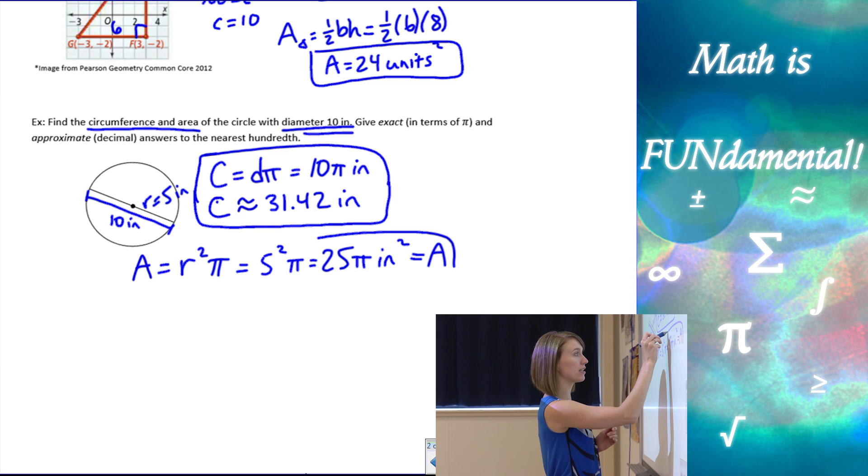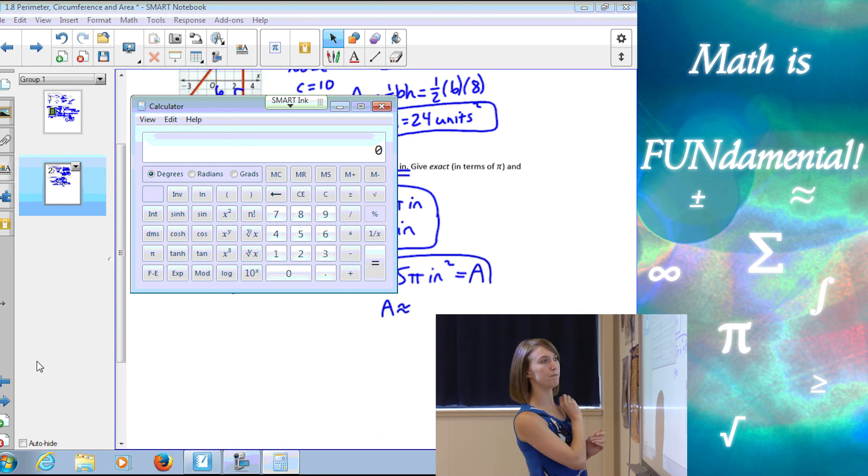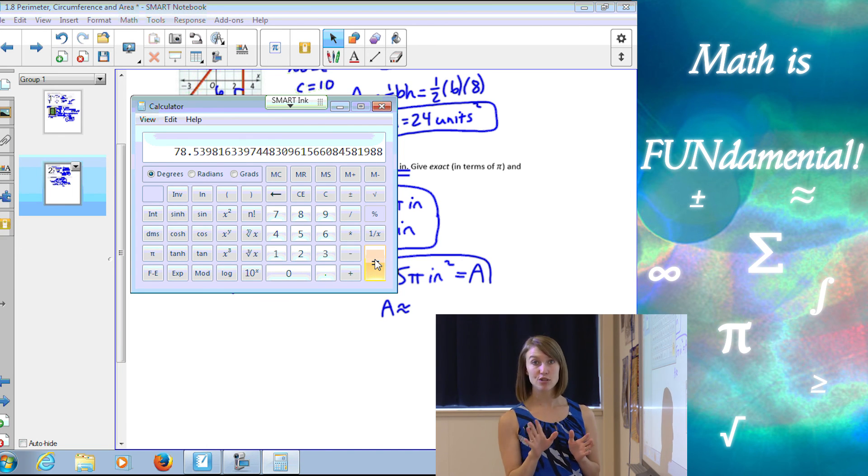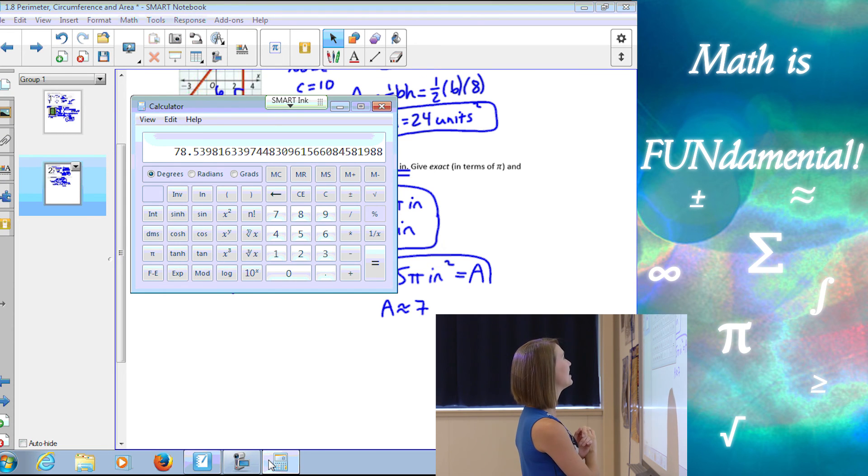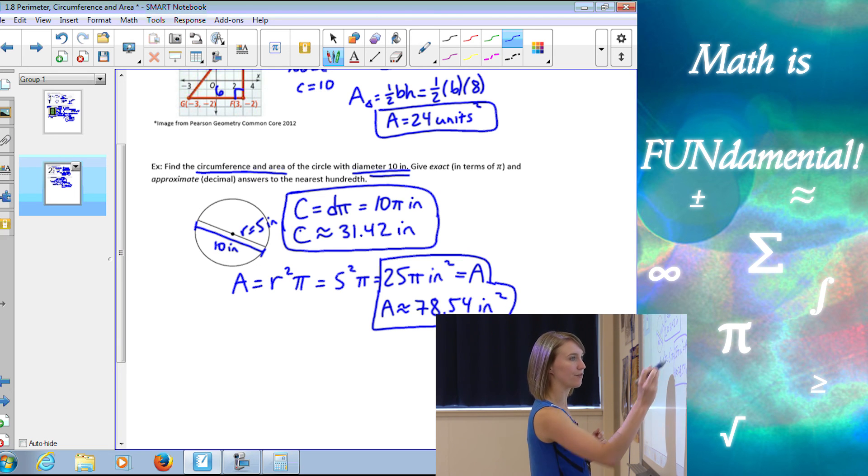And then for my approximate area, I need to use that calculator. And I want 25 times pi. 25 times pi is going to give us, remember we're rounding to two decimal places, 78.539. So that's going to be 78.54. So 78.54 inches squared for my approximate answer for my area.